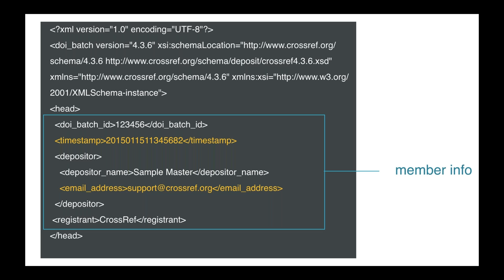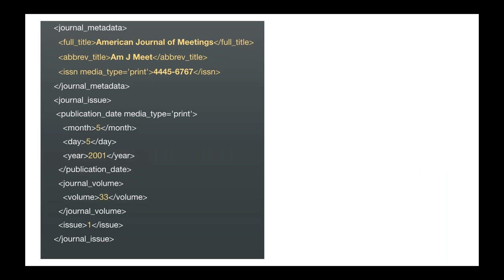For those of you that are going to create the XML yourself, the initial XML you create must include metadata and an identifier. Our deposit schema enforces a rigid structure and our elements need to appear in a defined order. Every XML file that you send to us has some member-specific information in the head section. There's an email address used to send out logs when your file has been processed, and you provide that to us in your XML file.